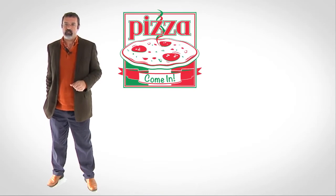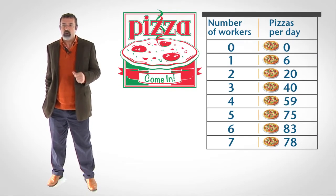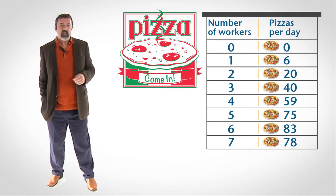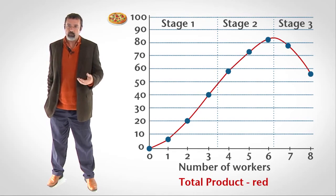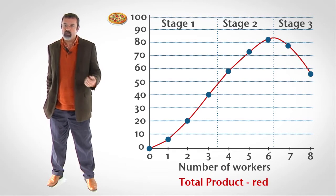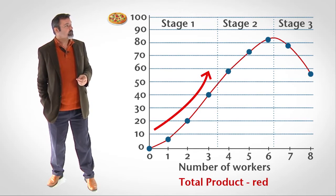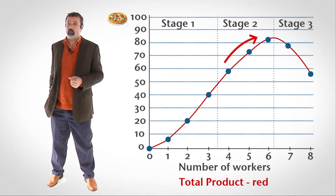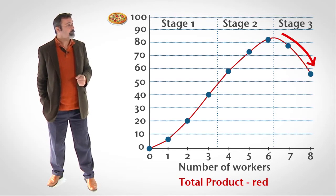Let's return to our example of the workers producing pizza. We know how much pizza we can produce with varying numbers of workers. If we plot these data, we can see how the firm's output changes as the firm increases the quantity of short-run factors it employs. In Stage 1, output increases at an increasing rate. In Stage 2, output increases at a decreasing rate. And in Stage 3, output decreases.